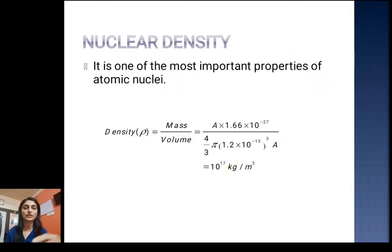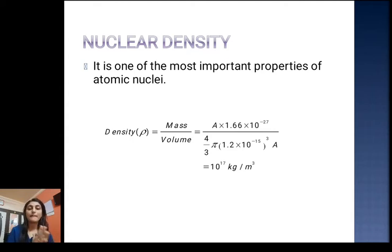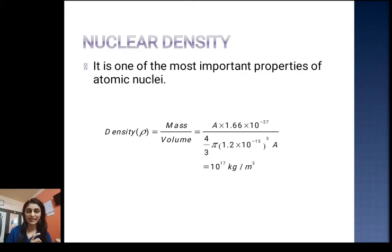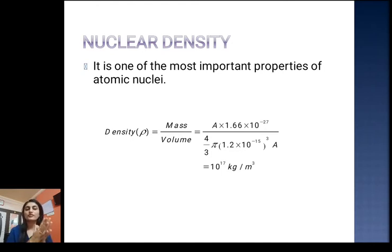Nuclear density is one of the most important properties of atomic nuclei. Density is given by mass divided by volume. The mass of the nucleus equals mass of one nucleon (1.66 × 10⁻²⁷ kg) multiplied by the atomic mass number A, and the volume is (4/3)πr³, taking radius approximately as 1.2 fermi. Performing these calculations gives approximately 10¹⁷ kg/m³, which is an extremely high density, meaning the nucleus is highly compact.